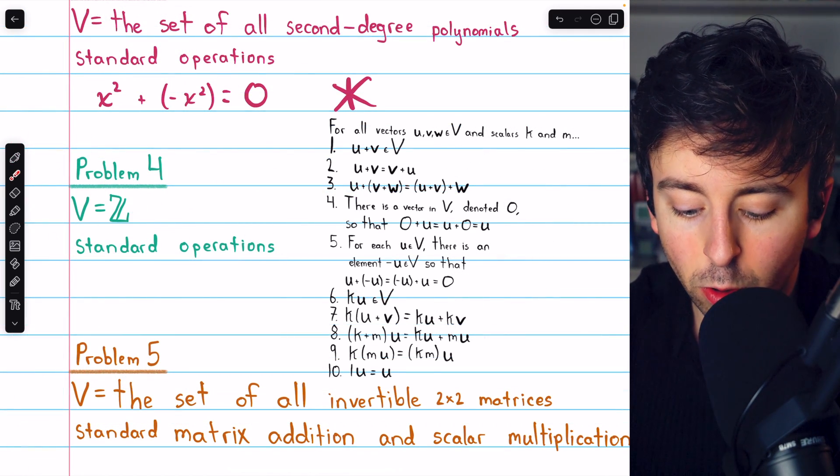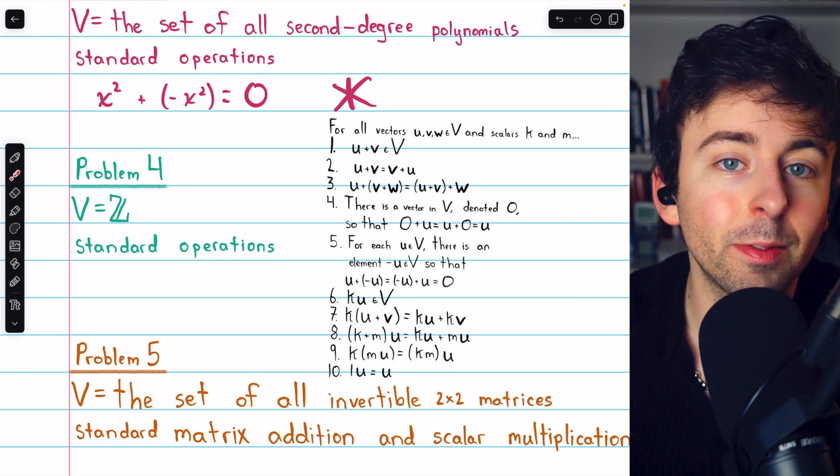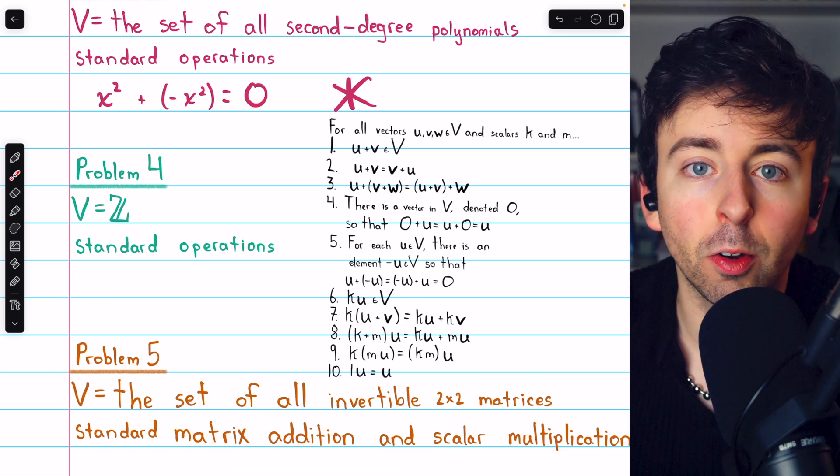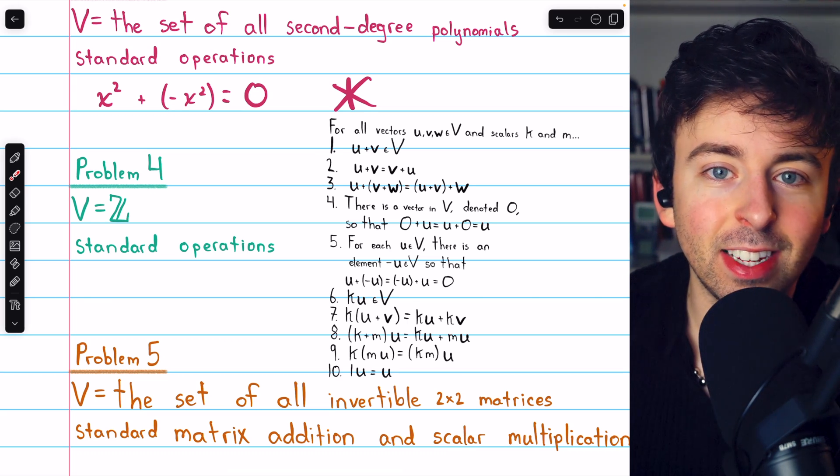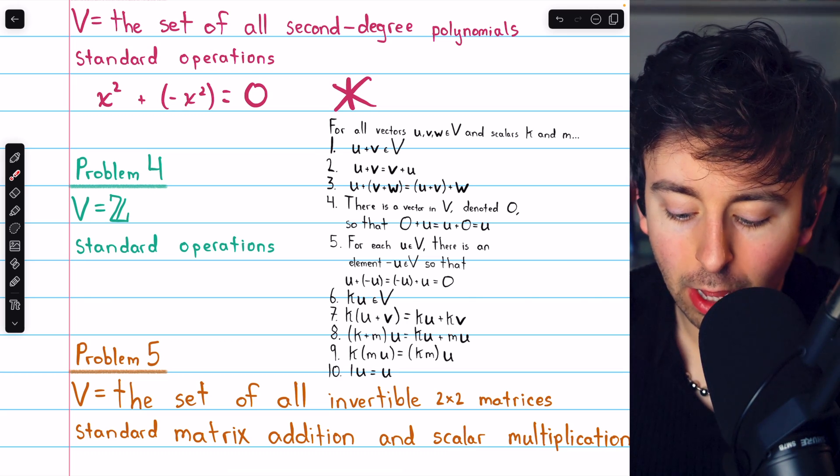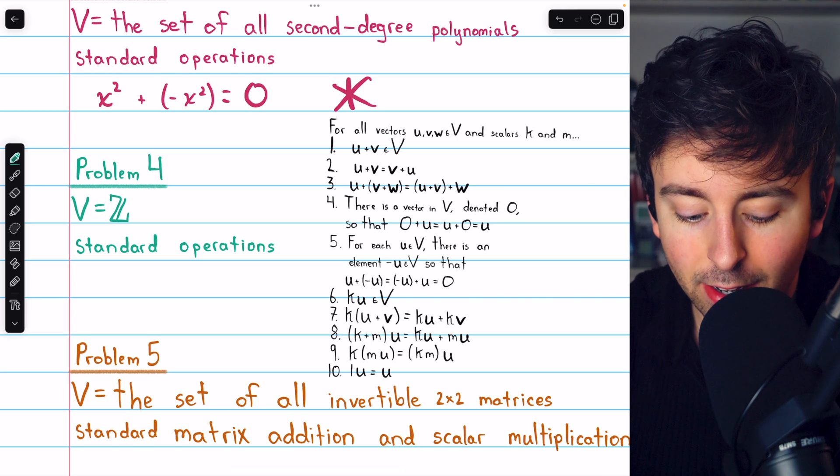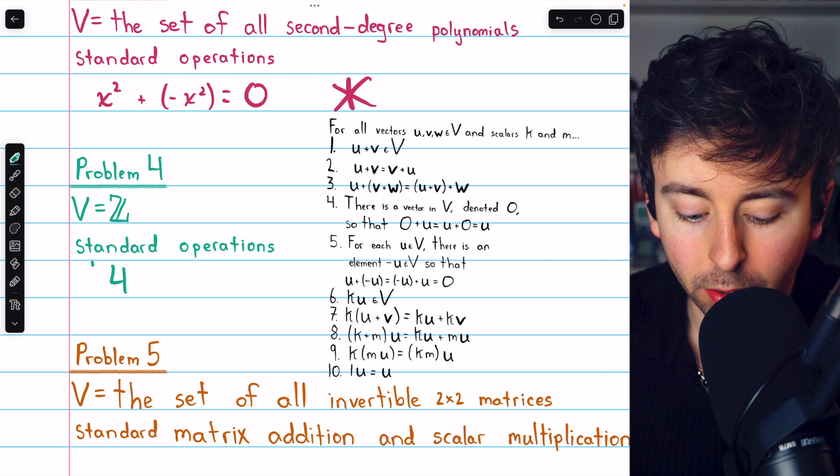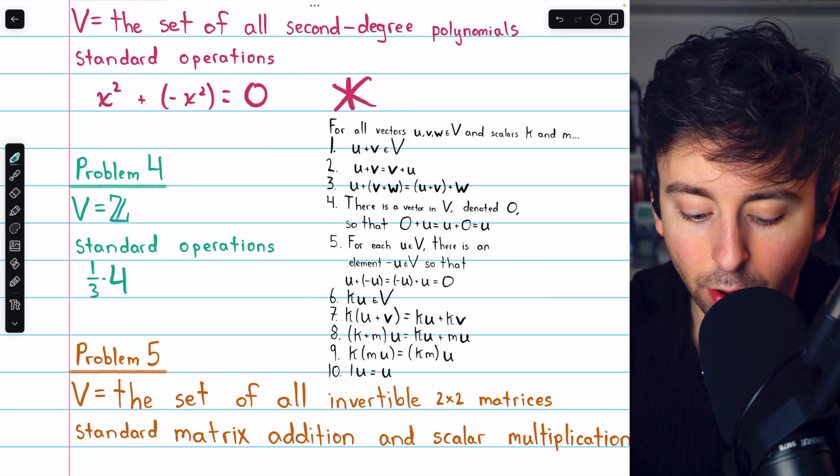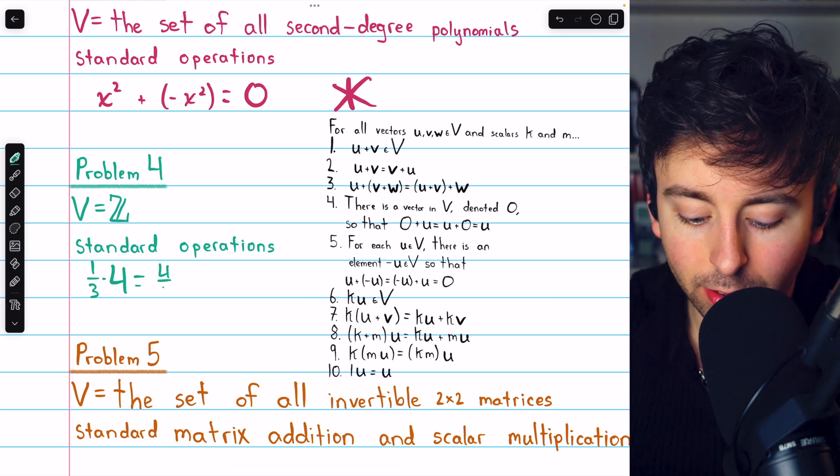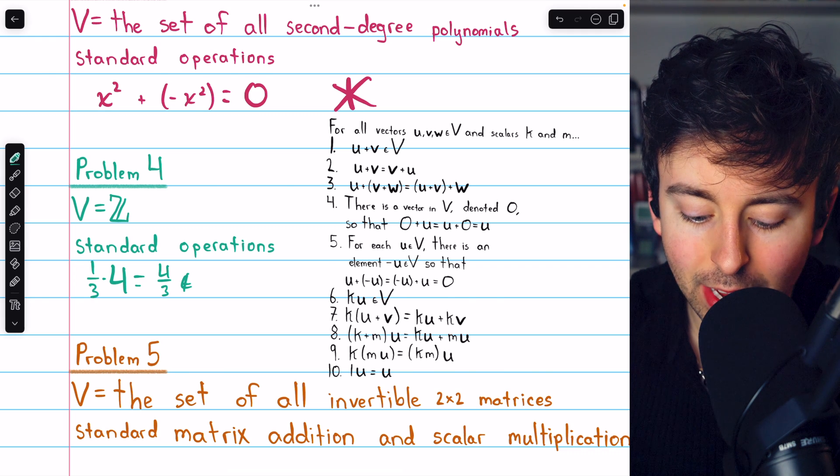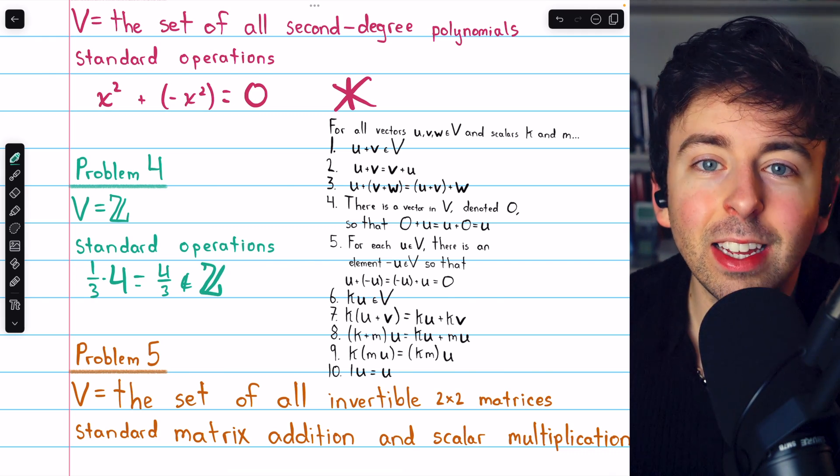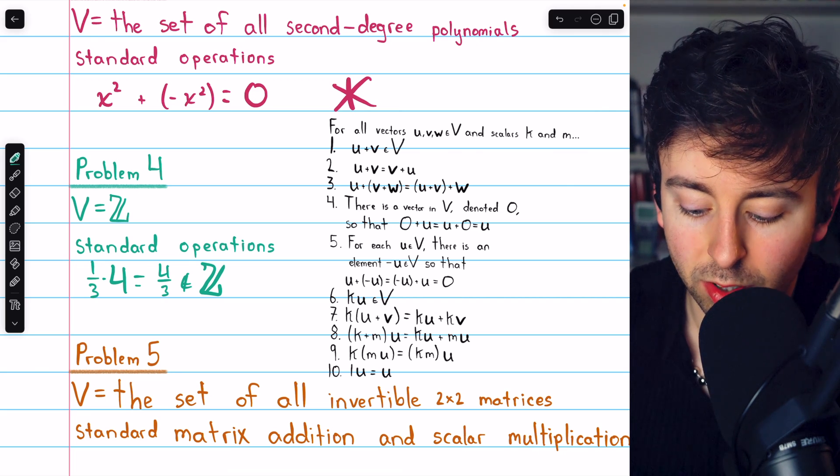Problem 4 is the set of integers with the standard operations of addition, and multiplying an integer by a real number would be scalar multiplication. It's quick to see that we do not have closure under scalar multiplication in this set, because if we take the element 4, for example, and multiply it by the scalar one-third, we get four-thirds, which is not an element of the integers. And so this set with the given operations is not closed with respect to scalar multiplication. We have violated axiom 6.